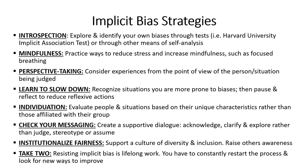The first strategy is Introspection — explore and identify your own biases through tests. Harvard University's Implicit Association Test is available. You may or may not agree with the results, but it's insightful. I enjoy providing the test during trainings because it brings about dialogue around these topics and forces you to look inward whether you agree or not. Introspection — you can take tests or through other means of self-analysis, awareness, bringing about awareness, and emotional intelligence.